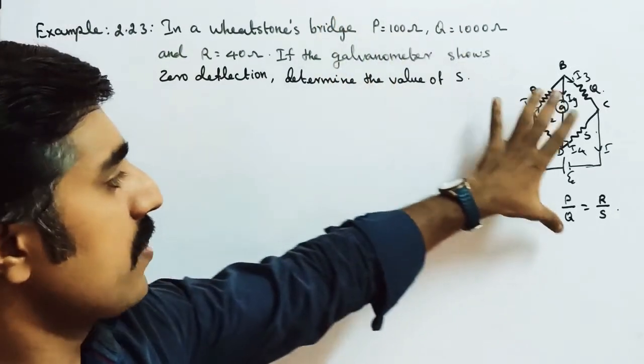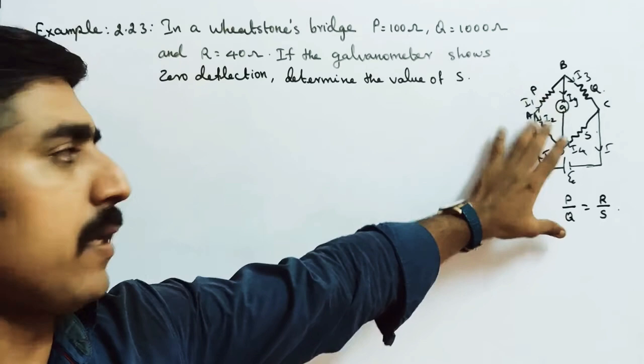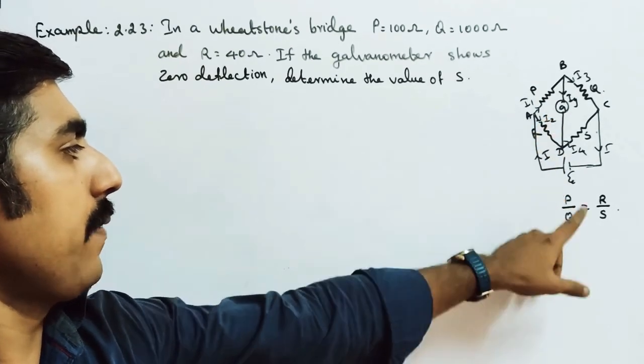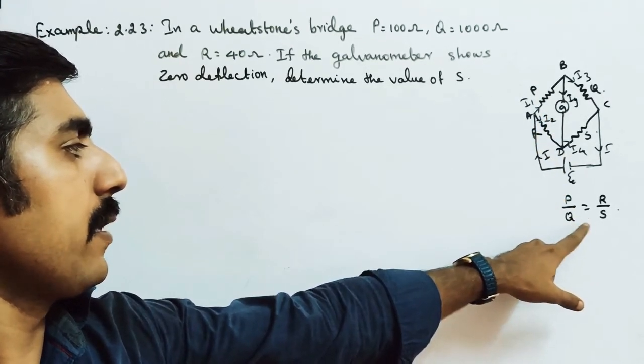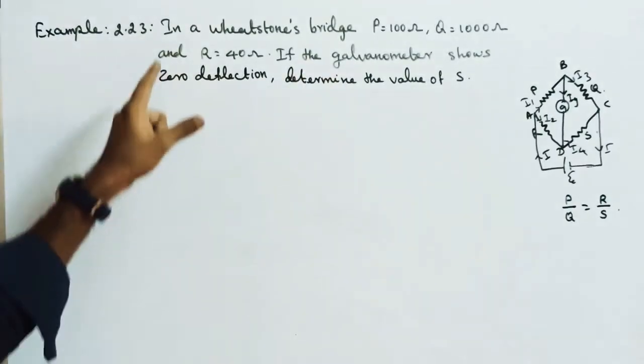We are going to discuss the question in the diagram. For Wheatstone's bridge, the final formula is P by Q equals R by S. So see the question.